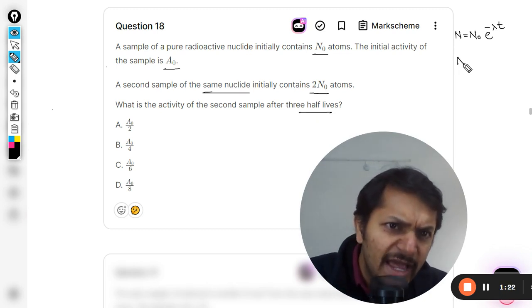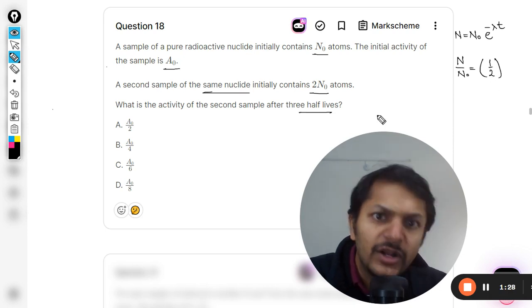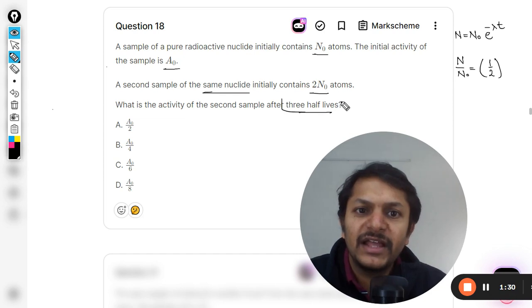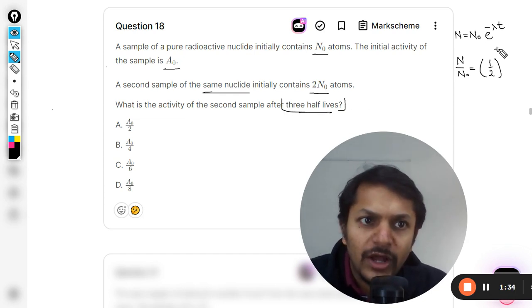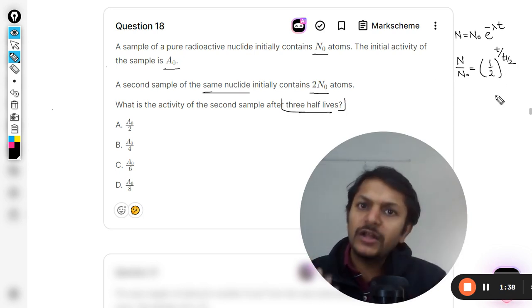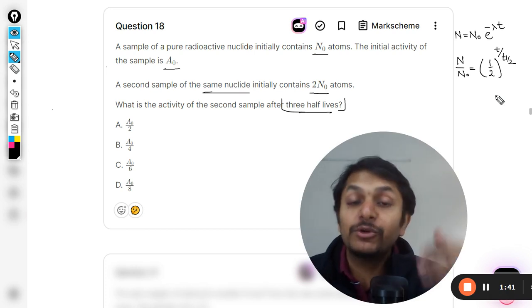Another formula I've given you is N divided by N₀ equals one-half raised to the power of the number of half-lives passed. Like they have written three half-lives, so I can call it n, or I can write it as t divided by t-half.